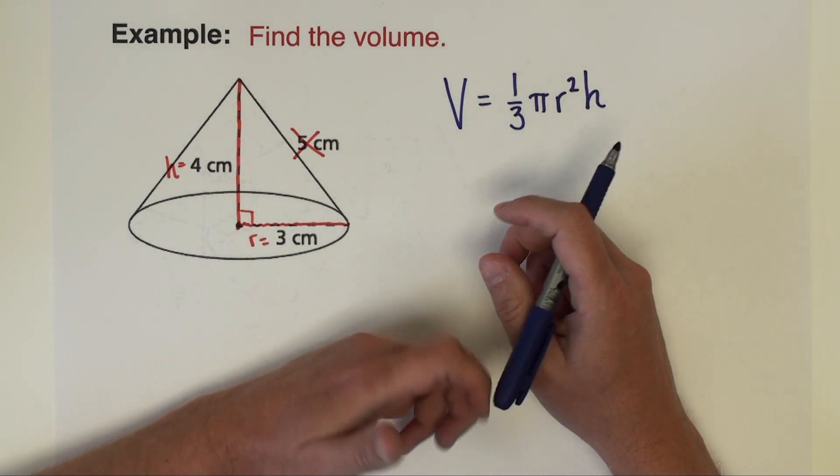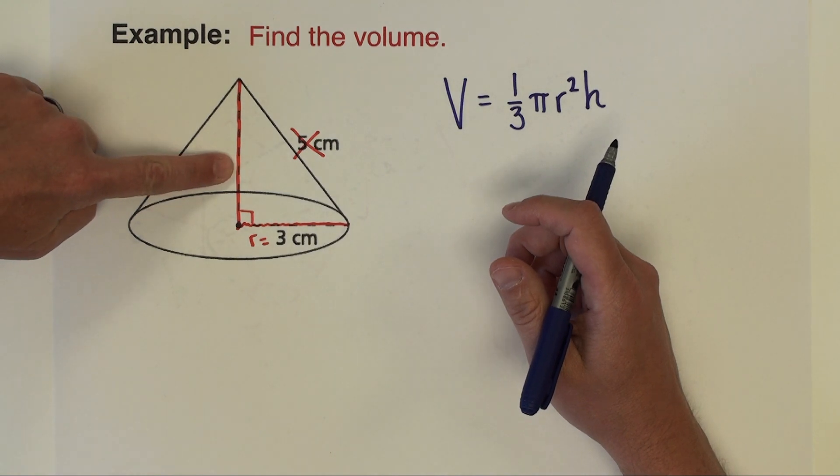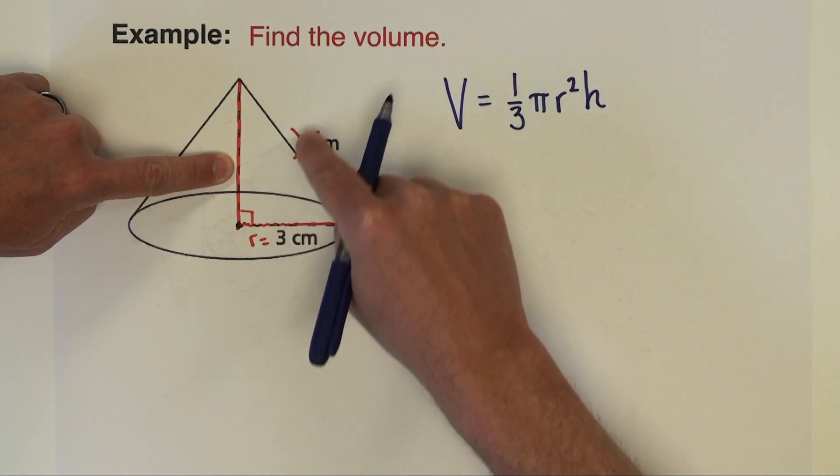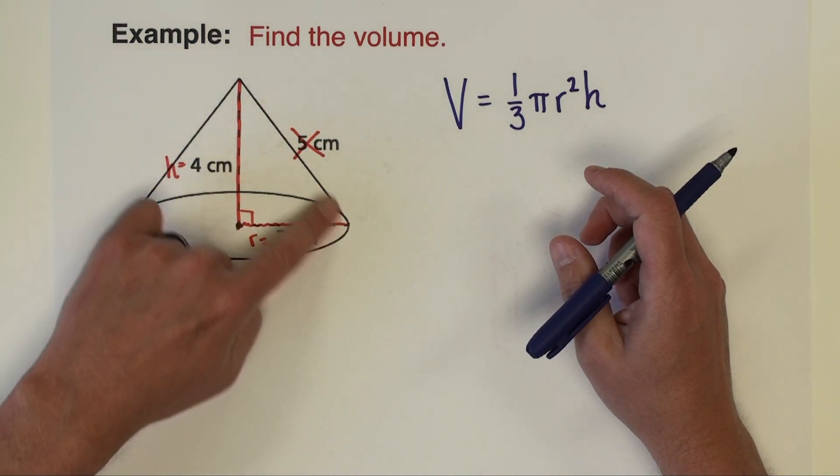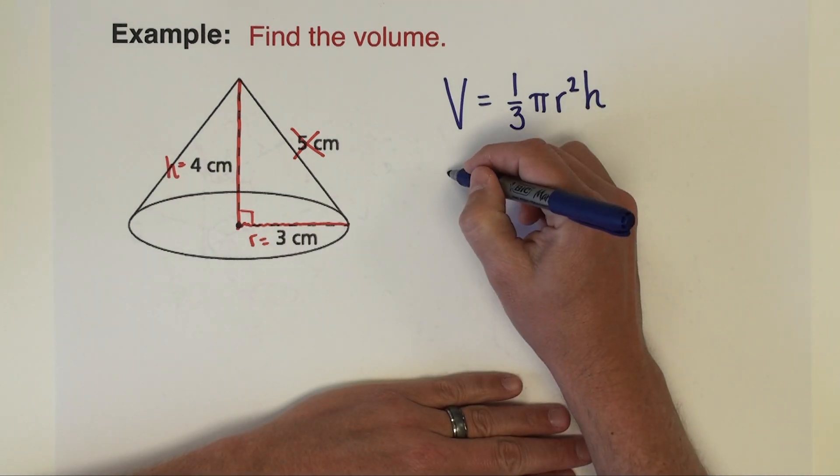The 5 is extra information in this particular case. We're not going to need it, but you can see like possibly had we not been given the height, we could certainly use that measurement with this one and do Pythagorean's theorem to get what we need. So it might be a case where you could use that, but it's not going to be used in the formula.